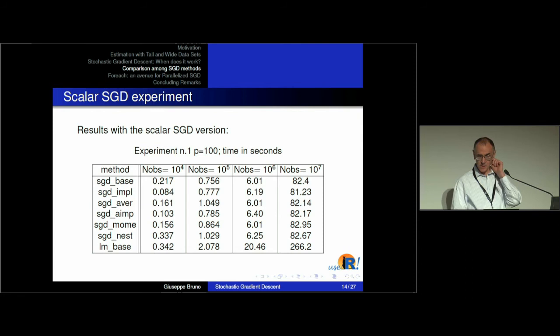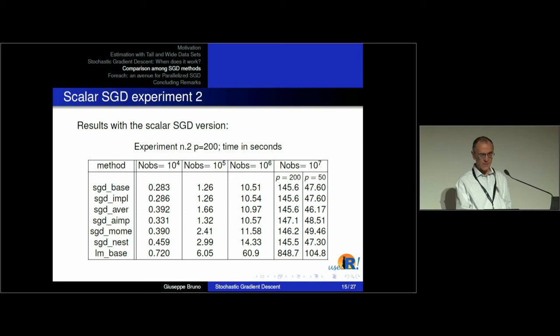When I go from 100 parameters to 200 I have this value. On the last column I split for 250 parameters because I will need the 50-parameter example to compare with the parallel solution.